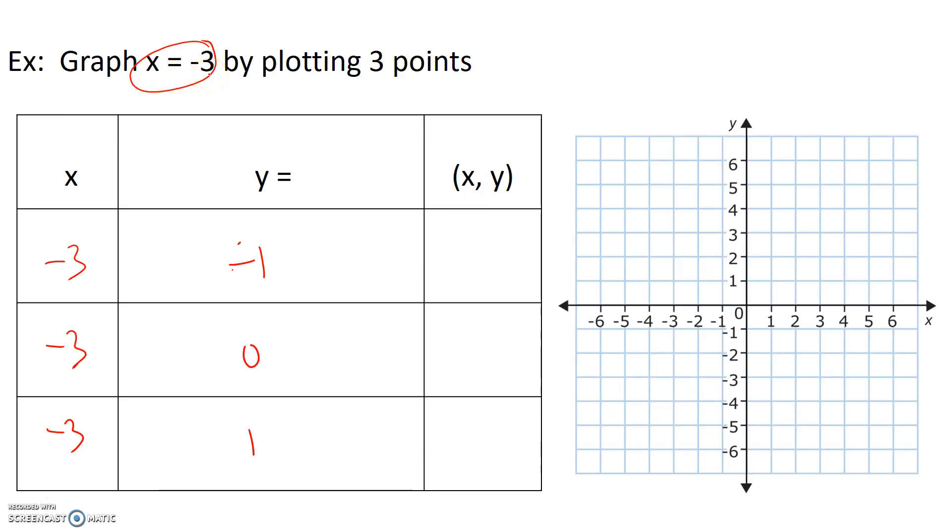So our first point will be negative 3, negative 1. Our second point is negative 3, 0. And our third point is negative 3, 1.